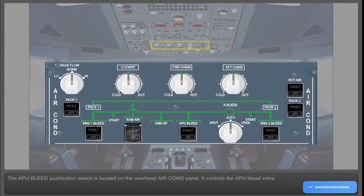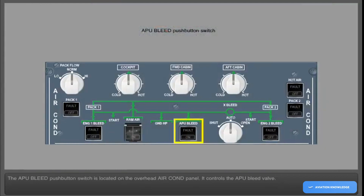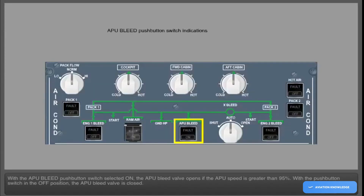The APU bleed push-button switch is located on the overhead air conditioning panel and controls the APU bleed valve. With the APU bleed push-button switch selected on, the APU bleed valve opens if the APU speed is greater than 95%. With the push-button switch in the off position, the APU bleed valve is closed.